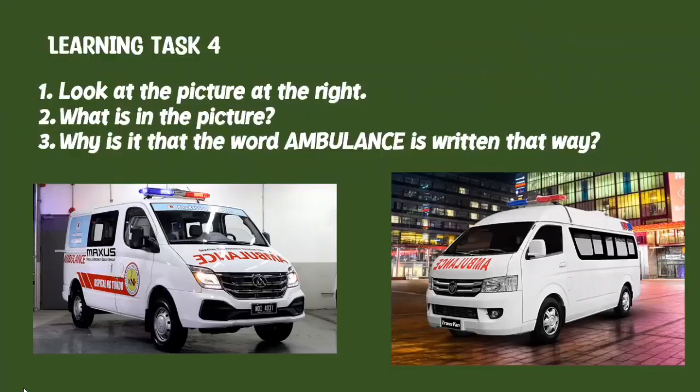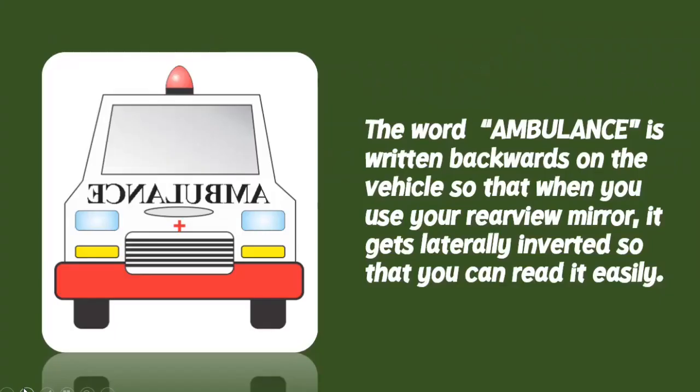For learning task 4, look at the picture on the right. What is in the picture? Yes, it's an ambulance. Why do you think the word ambulance is written that way? The word ambulance is written backwards on the vehicle so that when you use your rearview mirror, it gets laterally inverted so that you can read it quickly.